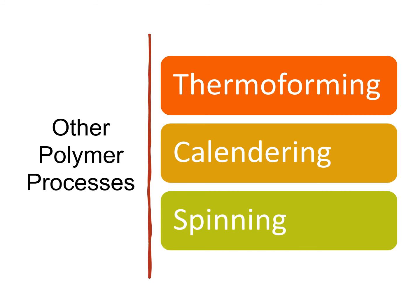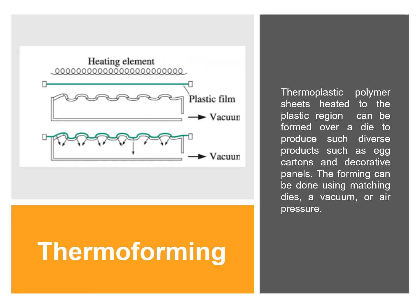Other polymer processes include thermoforming, calendaring, and spinning. For thermoforming, thermoplastic polymer sheets are heated to the plastic region and formed over a die to produce diverse products like egg cartons and decorative panels. The forming can be done using matching dies, vacuum, or air pressure. The illustration shows the use of vacuum with plastic film.